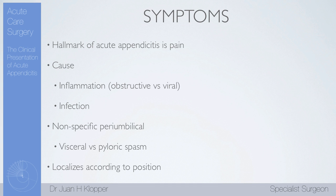With this inflammation and infection, we have pain. Most people will start with a non-specific peri-umbilical pain. It is common to read that it is a visceral pain. Remember the appendix is in the embryological mid-gut, with a visceral nerve supply — a type of nerve supply that cannot differentiate area very well — so you get this peri-umbilical type of pain.